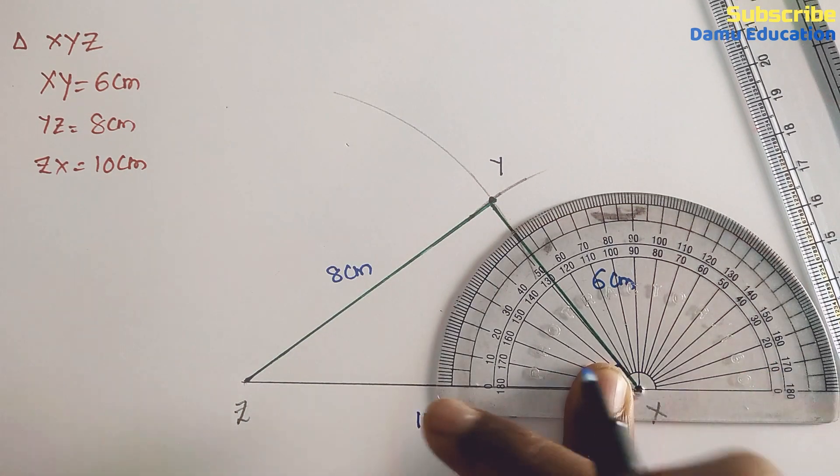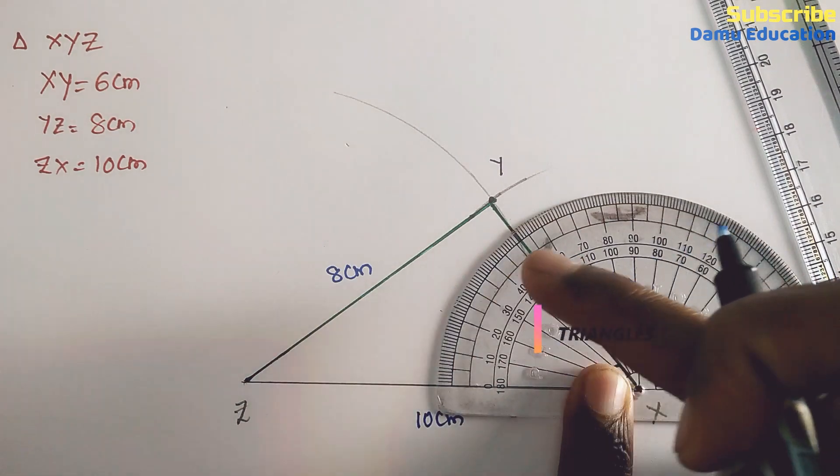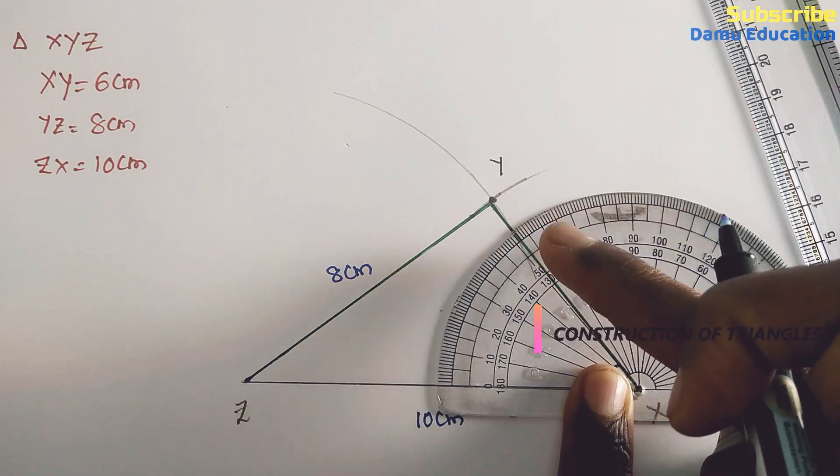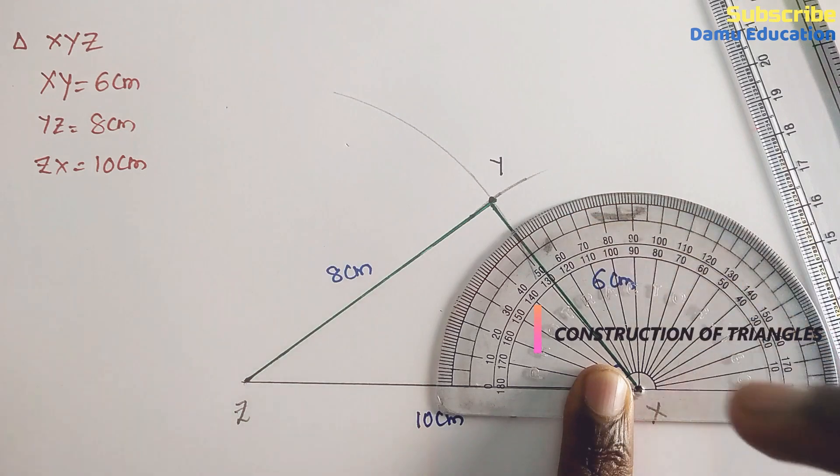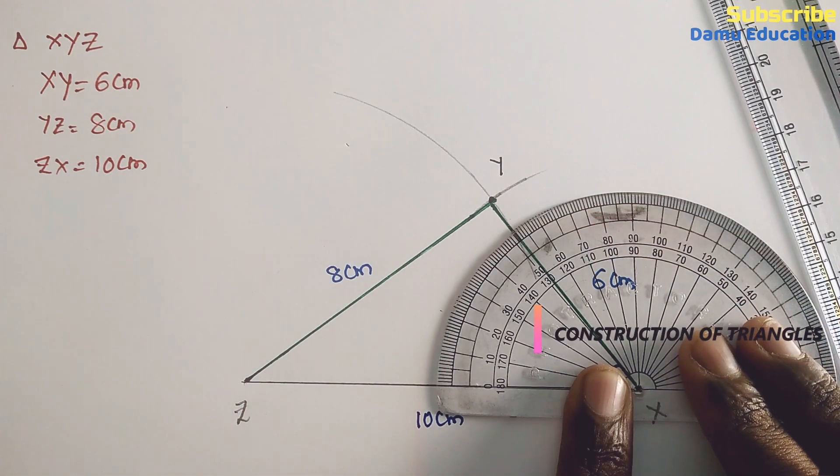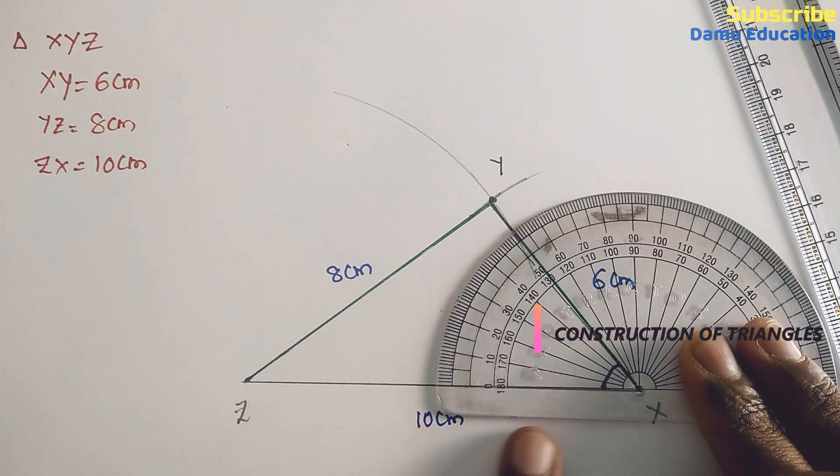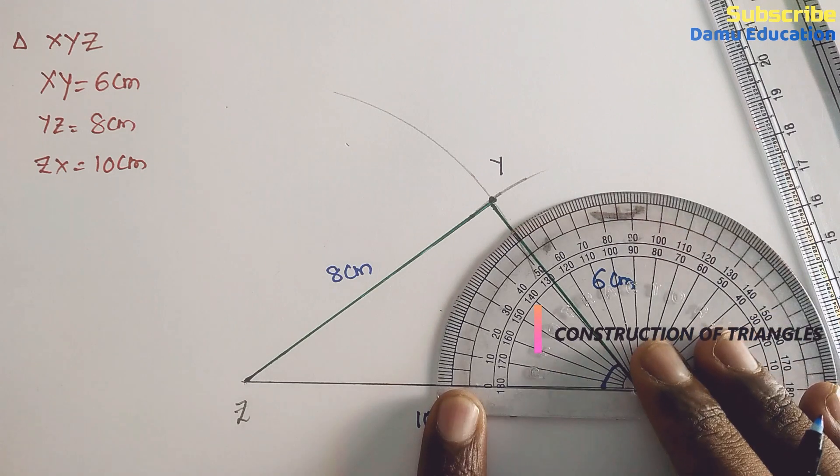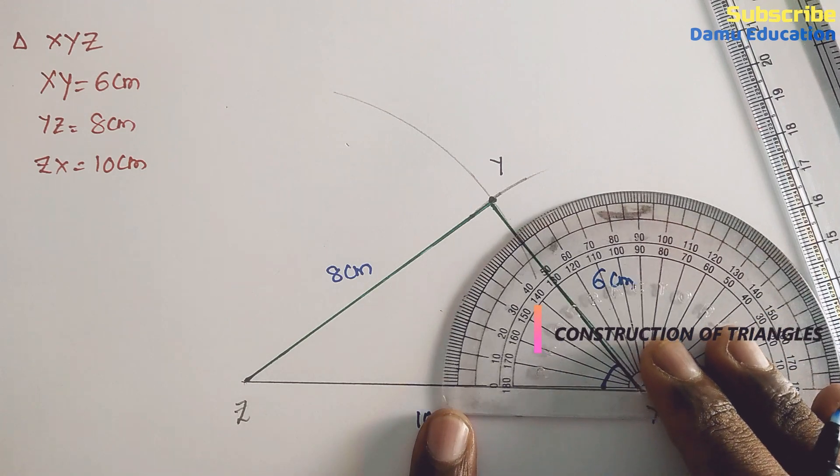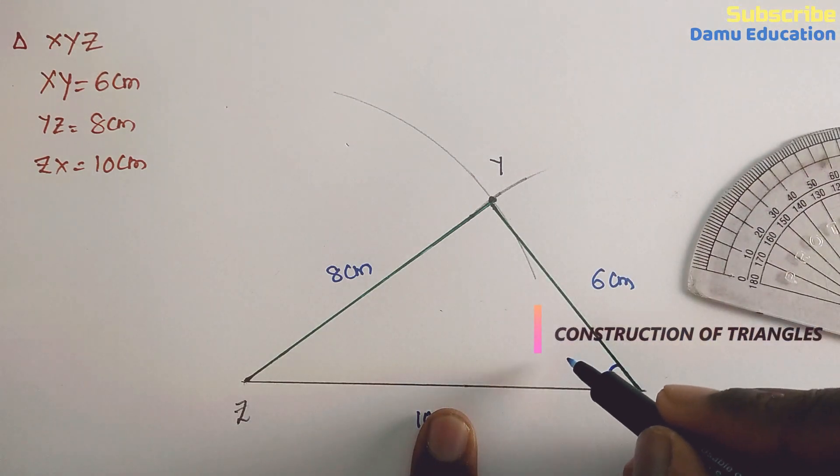So here the angle will be 0, 10, 20, 30, 40, 50—around 50 or 52 degrees. You can take it as 52 degrees or 53 degrees, or you can take it as 50 degrees also. It is 52 degrees.